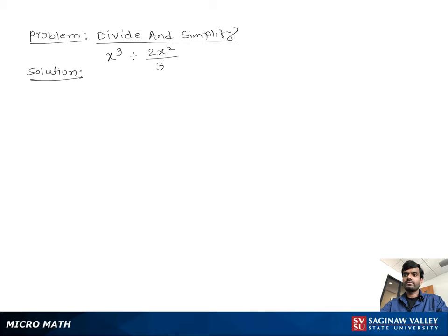Divide and simplify x cube divided by 2x square over 3. Let's write the problem again: x cube divided by 2x square over 3.